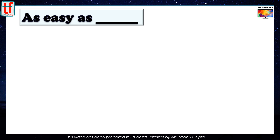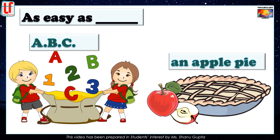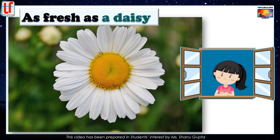As easy as ABC. The alphabet is among the first things that kids learn, so it obviously seems simple to grown-ups. Sometimes we also say as easy as apple pie. Both similes mean very easy. For example, adding two numbers, say 11 and 23, is a sum that is as easy as apple pie. As fresh as a daisy. Daisy is a very common flower and this expression means very fresh. For instance, when I wake up after a good night's sleep, I feel as fresh as a daisy.